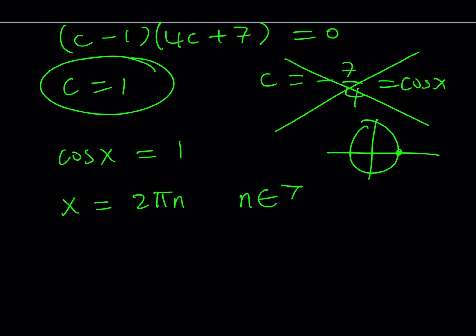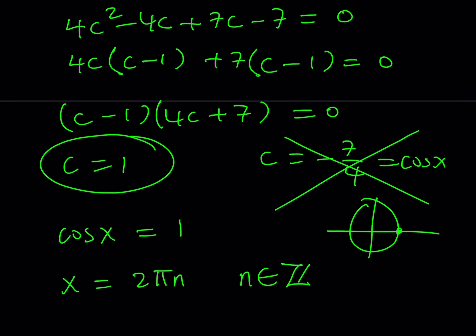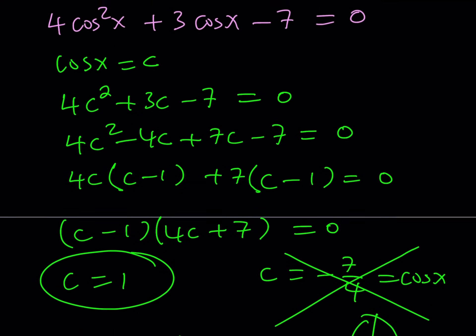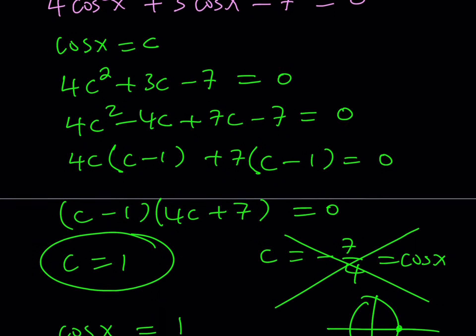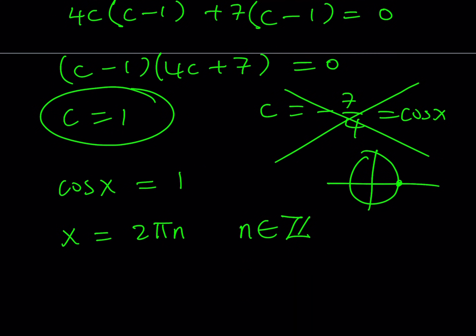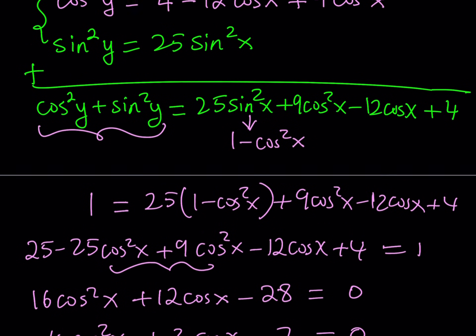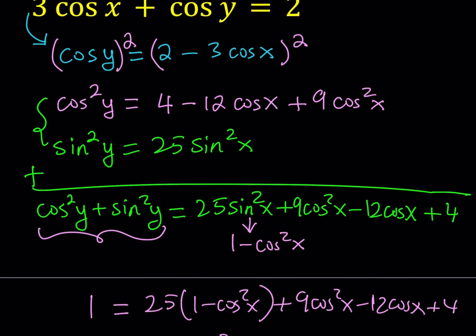So from here we get that x equals 2πn, where n is an integer. Those are the x values. Now we need to find the y values as well, because this is a system with solutions for both x and y. We found that cosine x equals 1, so we can substitute that into our equations. Since the second equation contains cosine x, we replace cosine x with 1.